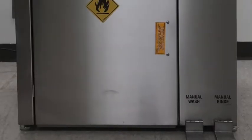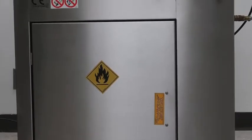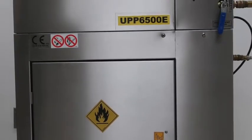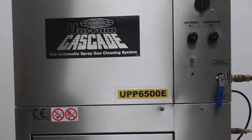This video is an introduction and an overview of the UPP6500D, an automatic cleaning system from UniRAM that cleans one gun and one pressure pot with the ability to also flush out hoses.